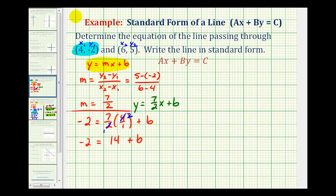So now we can solve for b by subtracting fourteen on both sides. This would be zero, so we have b equals negative sixteen. So now we have enough information for the equation of the line in slope-intercept form.